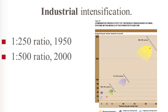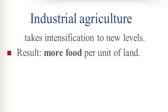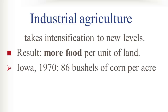By the year 2000, that increased to one farmer feeding 500 people. Industrial agriculture takes what we call intensification — which we see with the shift from horticulture to plow agriculture, for example — to whole new levels, and the result is much more food per unit of land.